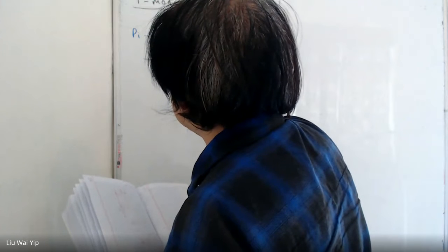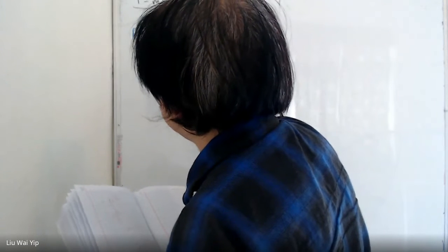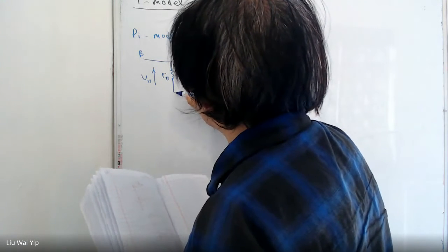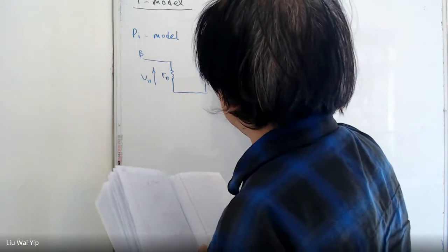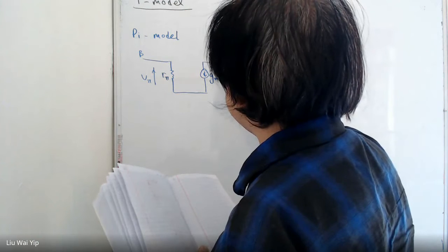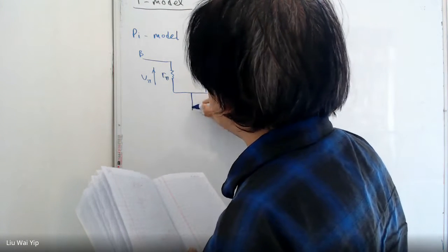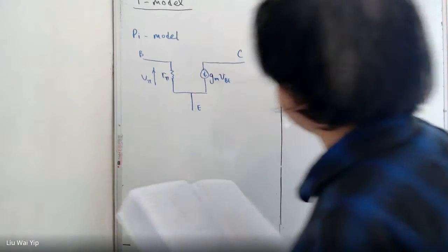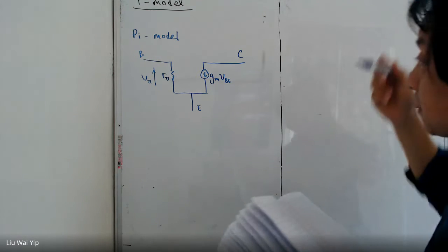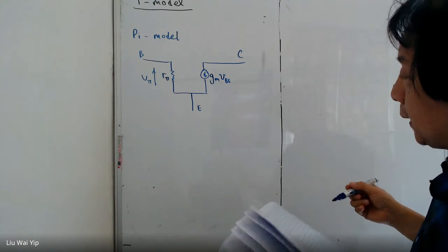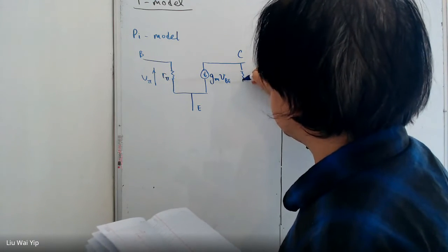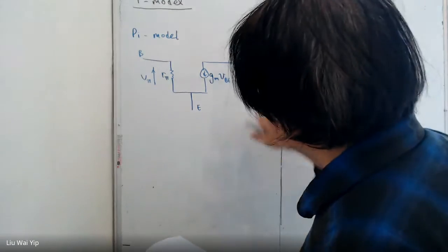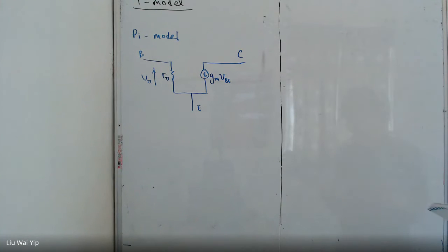R pi, and we have a voltage here V pi, and B. And this is what we have learned. And we also have early resistance here. So for the time being, we just ignore the early resistance.